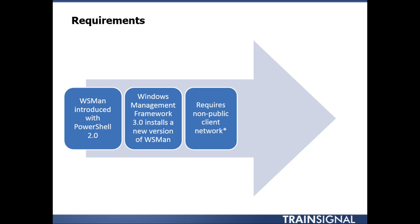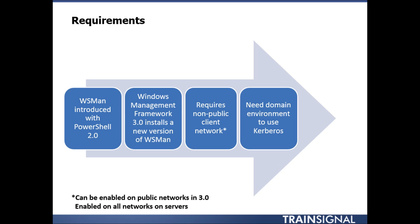This does require a non-public network on the clients — that is the machine where you'll initiate your remoting session from. That was definitely true in version 2. In version 3, it is possible to enable remoting on public networks, though it requires a few extra steps. Also, on server operating systems with PowerShell 3, remoting is automatically enabled by default. The best thing for working with remoting securely is a domain environment, because with a domain we can default to Kerberos, which gives us mutual authentication — critical when doing remoting.